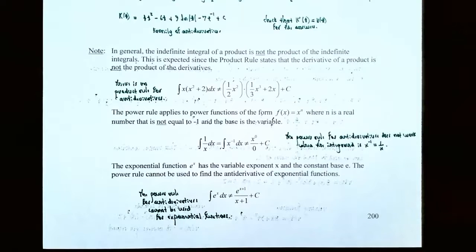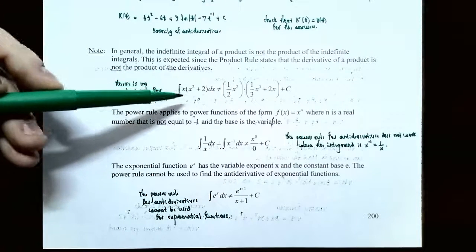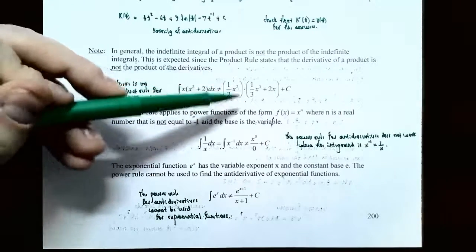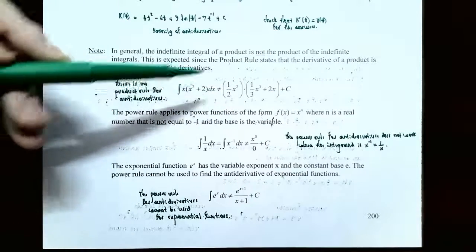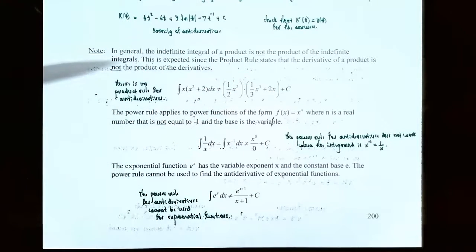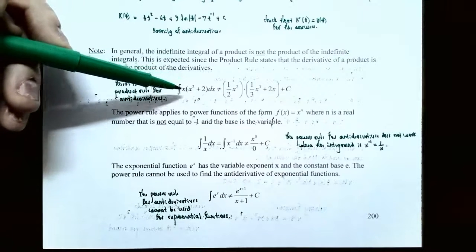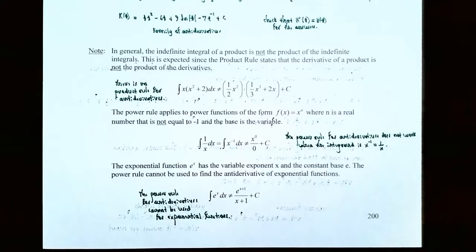A couple of important notes: in general, the indefinite integral of a product is not the product of the indefinite integrals. There is no rule to reverse the product rule. For example, the integral of x(x² + 2) — you cannot separately find antiderivatives of x and (x² + 2) and multiply them. Instead, expand by multiplying x through first to get a sum, then use the sum and difference rule to find the antiderivative of each term.